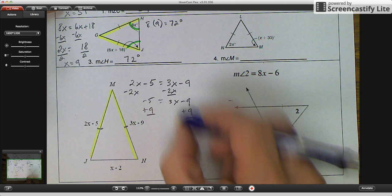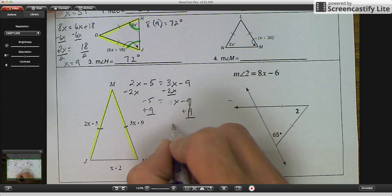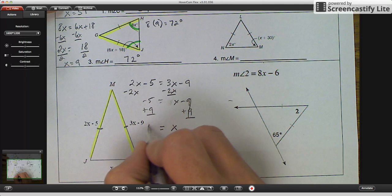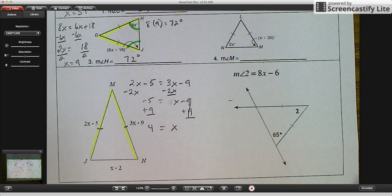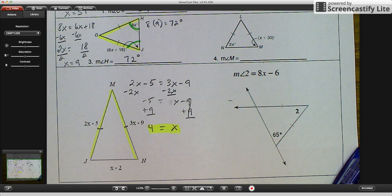Not 3X. 2X minus X. These cancel out. And you're left with X is equal to 4. Now that we have X equal to 4, I'll highlight it. We can substitute it in.